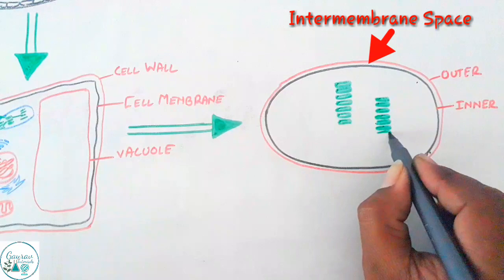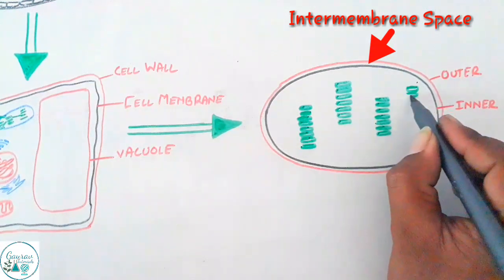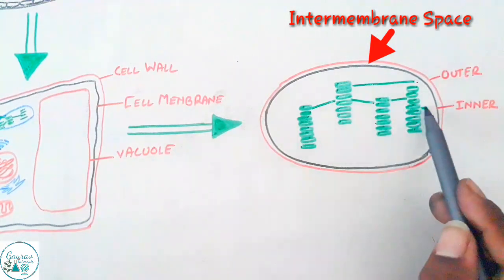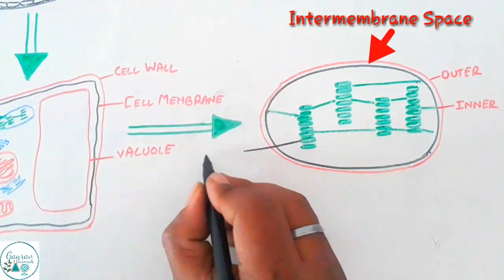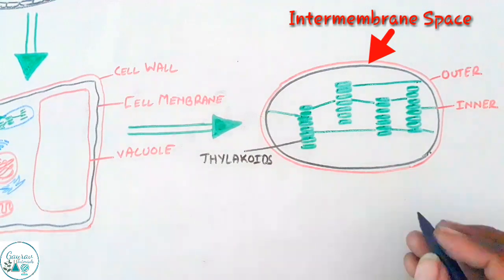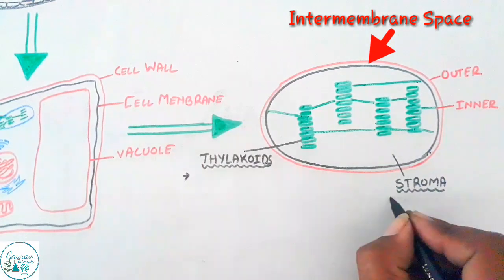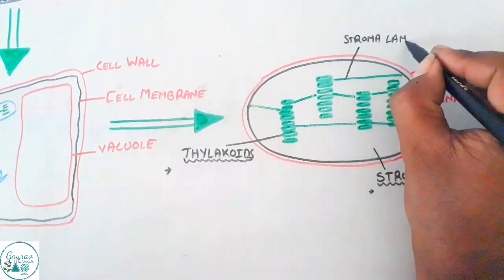A number of organized flattened membranous sacs which are called as thylakoids are present in the stroma. These thylakoids are arranged in stacks like pile of coins, now they are going to be referred to as grana. These granas are interconnected and they are also connected to the inner wall of the chloroplast. You've got a thylakoid, the empty space which is called as stroma, and then you have the stromal lamella.